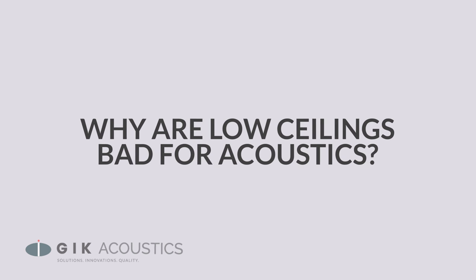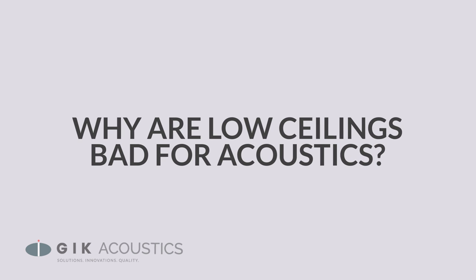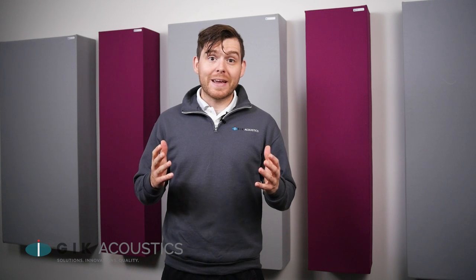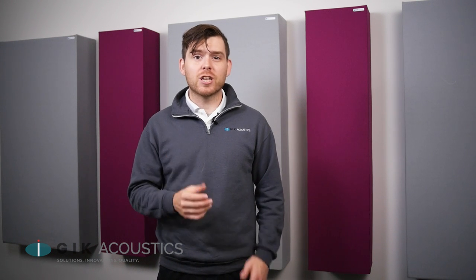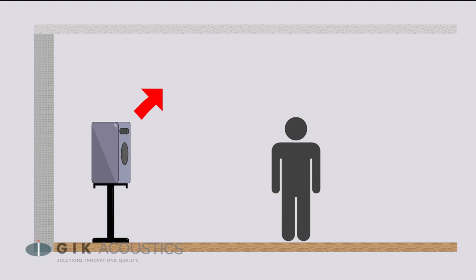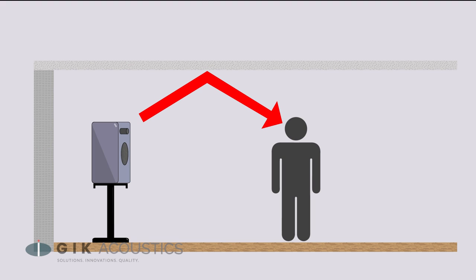Why are low ceilings bad for acoustics? While there's some debate as to what style of ceiling is best, low ceilings are never ideal for room acoustics. Low ceilings often cause issues with slap echo and comb filtering, with the early reflections between the floor and ceiling bouncing sooner and with more energy than they would in a taller room.